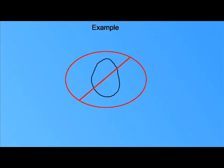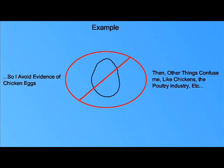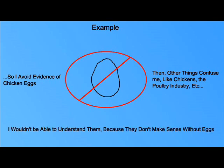For example, let's say that I decide that no chicken eggs exist. If I avoid all evidence of chicken eggs, other things — like chickens, the poultry industry, and so on — would seem like perplexing question marks to me. I wouldn't be able to understand them, because without chicken eggs, they don't make sense.